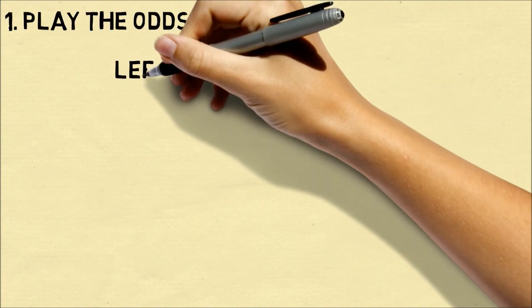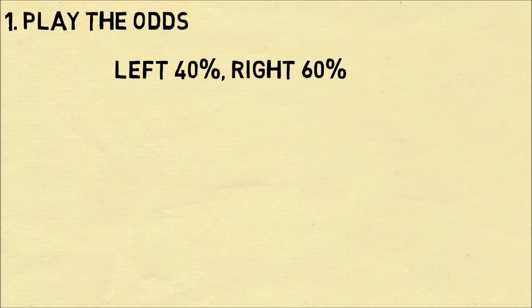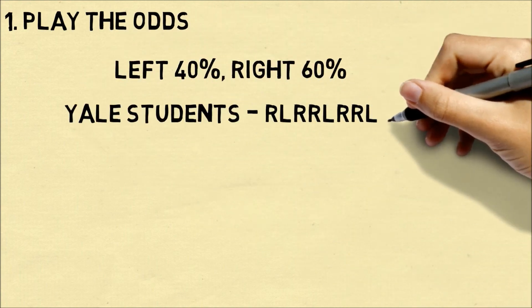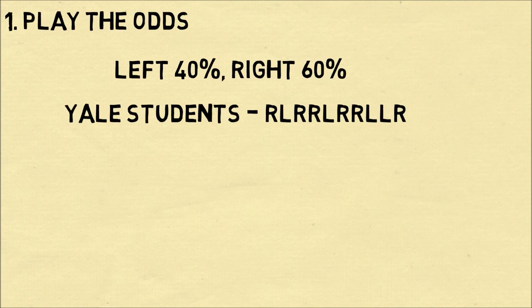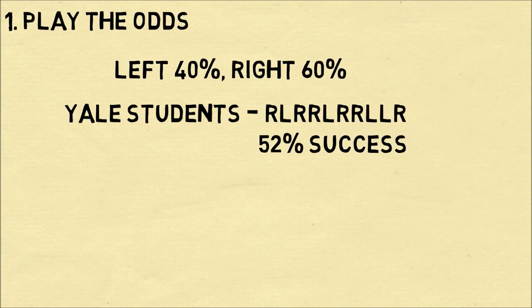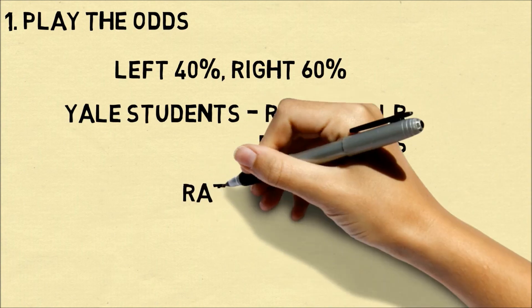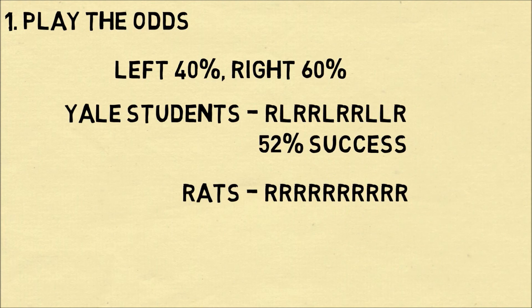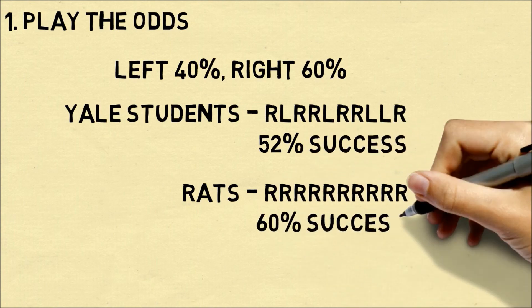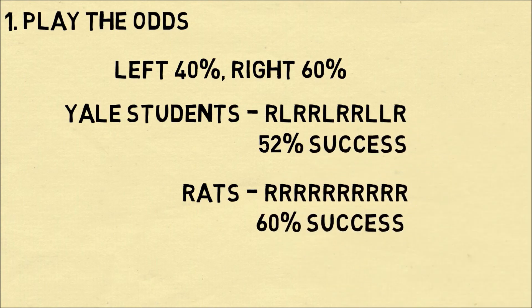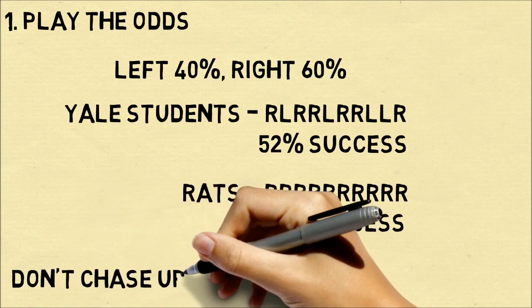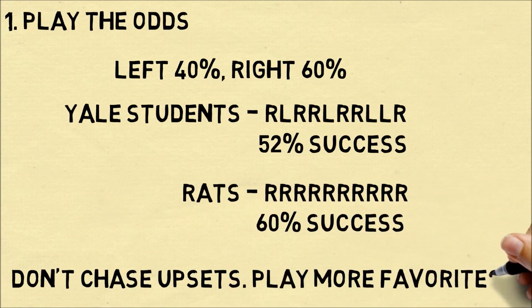Tip one: play the odds. Imagine you win 60% of the time if you pick right. How would you pick 10 times in a row? Yale students would pick a sequence of choices left and right randomly in an attempt to be perfect — they had a 52% success rate. Rats, by comparison, simply picked the favorite choice every time and had a 60% success rate, outsmarting the Yale students. The lesson is don't overthink it. You should consider playing more of the favorites to play the odds.